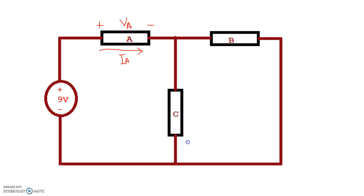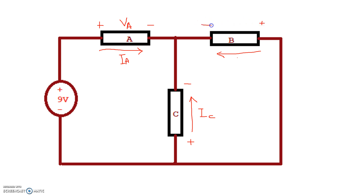Let's say we decided the voltage on C was positive on the bottom and minus on the top — we're basically saying the current direction goes from the bottom to the top. And for B, let's say the current was flowing from right to left. In that case, we're defining the polarity of voltage VB accordingly. We'll call this IB. Now we can start our circuit analysis using this set of current directions and voltage polarities.